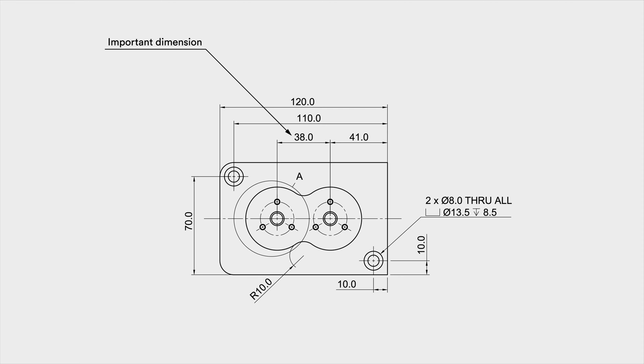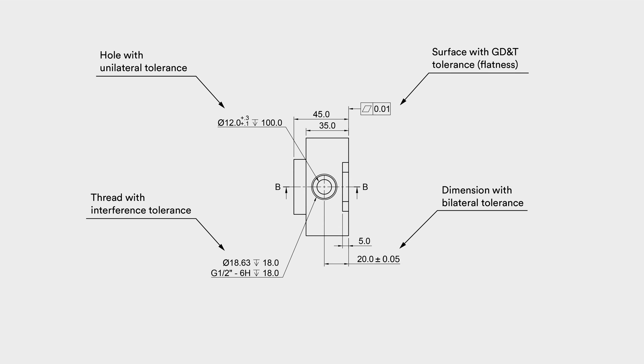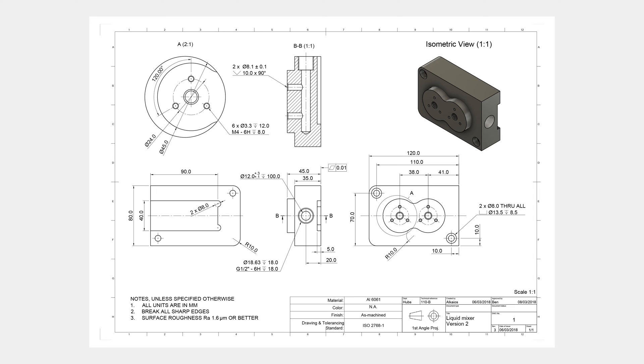In this video, we'll go over what a mechanical drawing should entail, our seven steps for preparing a drawing, and finally, how to correctly add critical dimensions, hole callouts, threads, and specifying tolerances on a technical drawing. You can download a high-resolution version and CAD of the technical drawing we are using as an example in this video. Find the links in the description below.